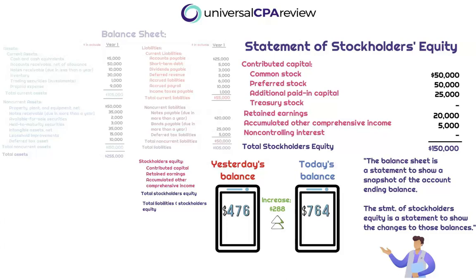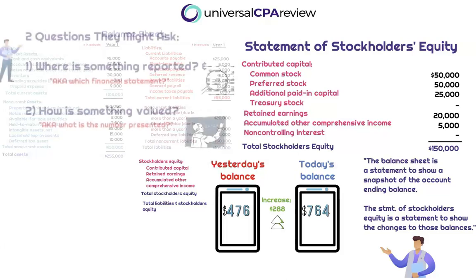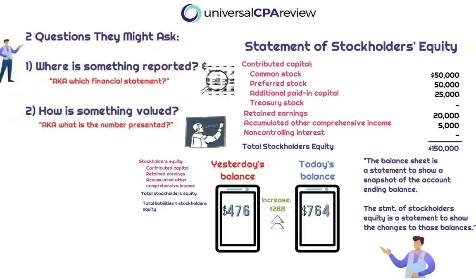This statement includes a few different accounts and is often overlooked. We are going to break each of these line items out in detail as we go through this course, because the name of the game is taking each line item in the balance sheet and dissecting it so that we can remember both where something is reported and how something is valued. Don't write this statement off — when we're focused with heads down on calculations like treasury stock methods, preferred stock calculations, and journal entries for issuing common stock, it might be easy to forget. But they could absolutely still test you on concepts related to where these line items will be reported, which is in the statement of stockholders' equity.